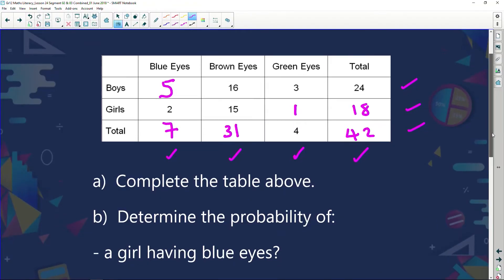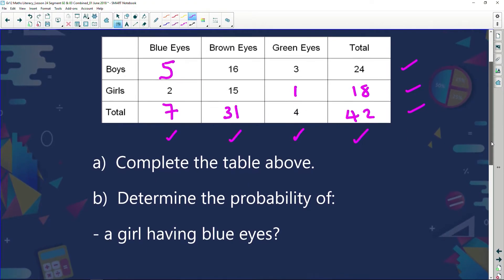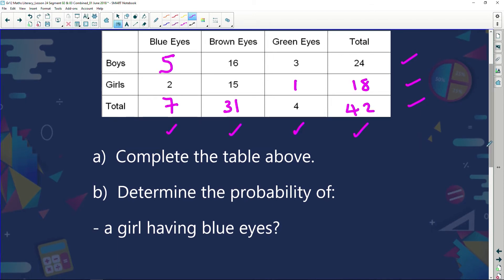The question now says using this contingency table, determine the probability of a girl having blue eyes. How many girls are there? There are 18 girls. How many have blue eyes? We've got 2. When I simplify you've got a 1 in 9 chance of selecting a girl at random that will have blue eyes.